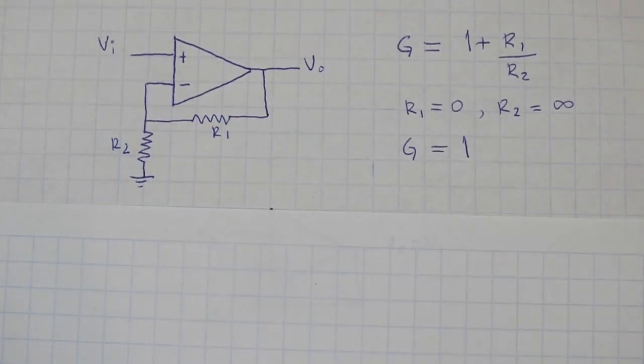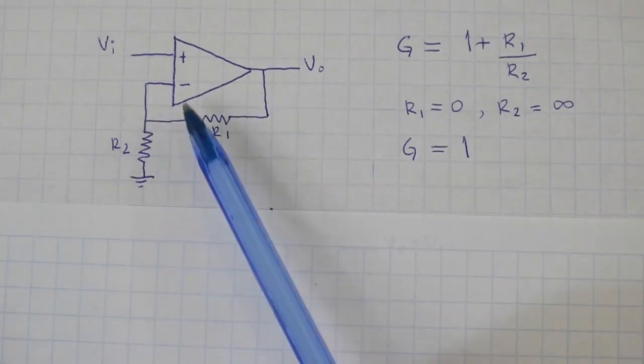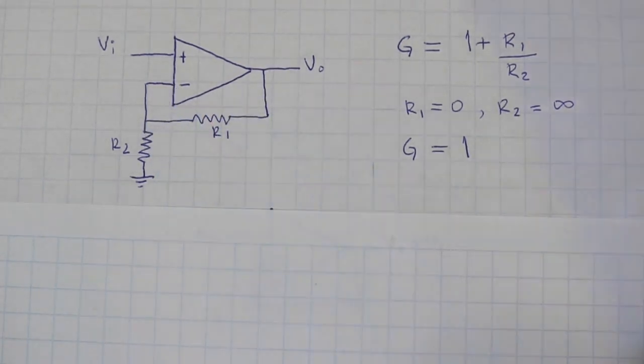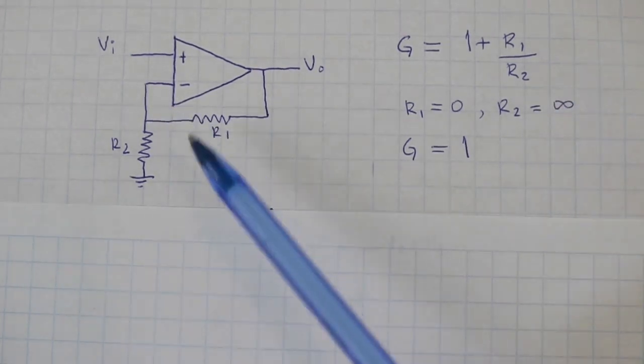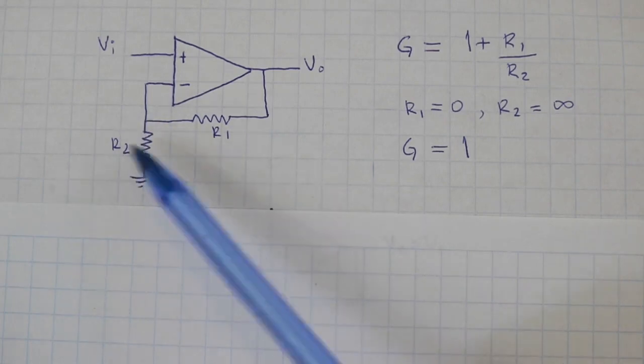And how do we obtain these values of resistance? Well, a resistance equal to 0 is just a wire going from here to here. And an infinite resistance will be just to disconnect this point here. No connection.